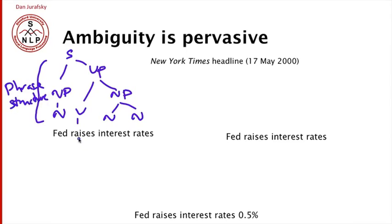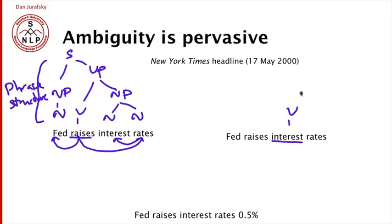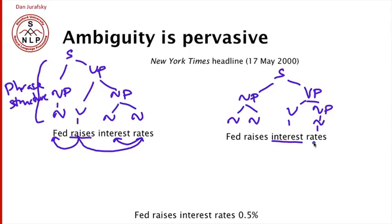We could also write a dependency parse where the head verb 'raises' has an argument 'fed' and another dependent 'rates,' and 'rates' itself has a dependent 'interest.' But another interpretation — one that people don't see but parsers find right away — is that 'interest' is the main verb. Somebody interests something, and what gets interested is 'rates,' with 'fed raises' acting as a modifier. This is a completely different sentence interpretation: something is interesting the rates. It seems unlikely to people, but for a parser it's a perfectly reasonable interpretation we have to learn to rule out.